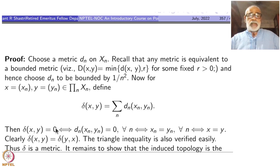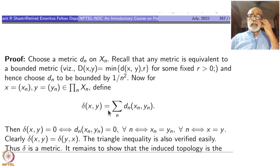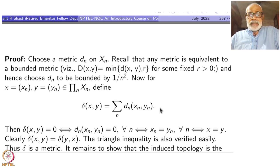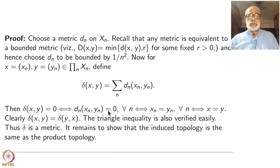I claim that delta is a metric. If delta(x,y) = 0, since the summation is a sum of all non-negative numbers, if the total is 0 then each term must be 0, so D_n(x_n, y_n) = 0 for every n, meaning x_n = y_n for every n, i.e., x and y are the same element. If you interchange x_n and y_n, the value does not change because D_n is symmetric, so delta(x,y) = delta(y,x). The triangle inequality is also valid because for each n, D_n(x_n, y_n) + D_n(y_n, z_n) ≥ D_n(x_n, z_n), and summing gives delta(x,z) ≤ delta(x,y) + delta(y,z).